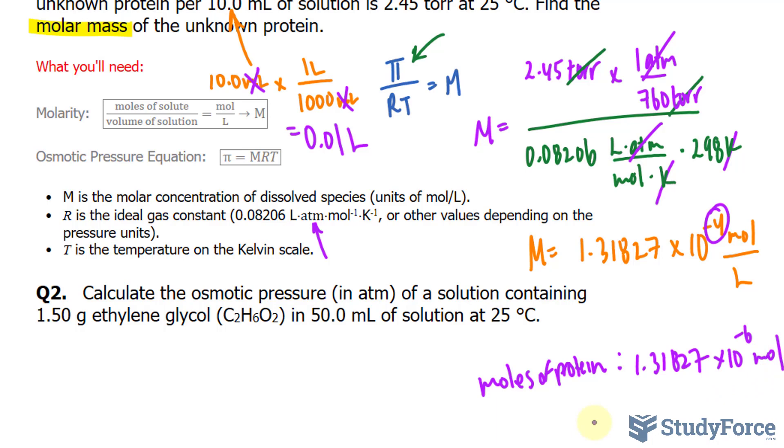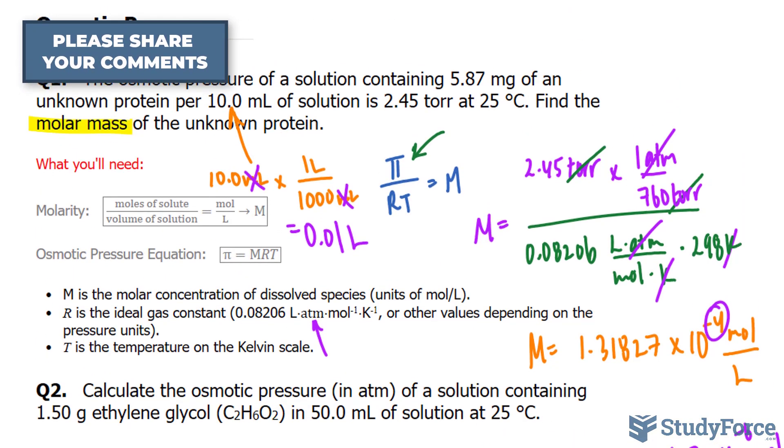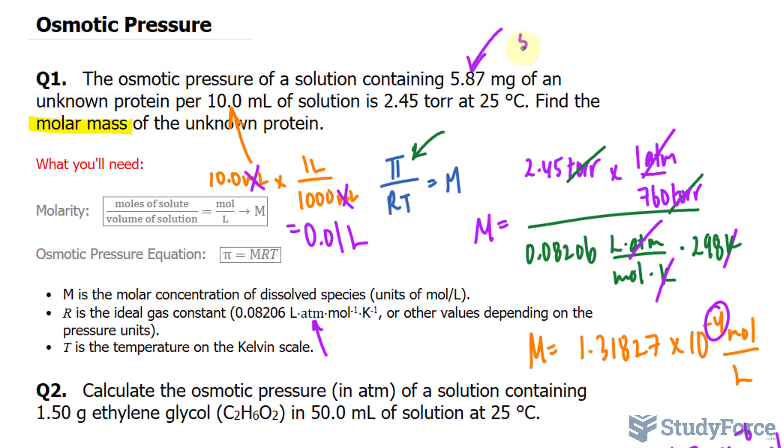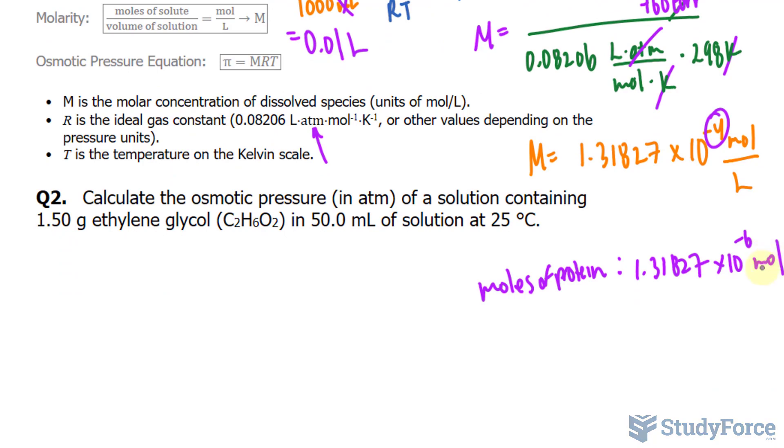We're looking for the molar mass. So our final step would be to take the mass, also given in the question, and we need to convert this into grams. So 5.87 milligrams times 1,000 milligrams per every 1 gram. This means we shift this 3 times, 0.00587 grams. And we'll take this now and divide it by that number so we can get grams per mole.